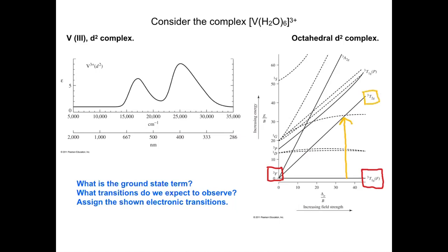If we start with the ground state triplet T1g, our lowest energy transition is going to be to the triplet T2g. We could also have a transition that goes to the triplet T1g, and a further third transition to the triplet A2g. Those are our three possible transitions. Notice the Tanabe-Sugano diagram: the lines of the same spin multiplicity are solid, and the dashed lines are going to different spin multiplicities.